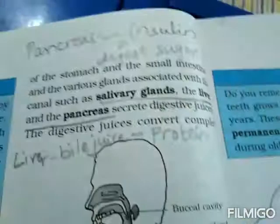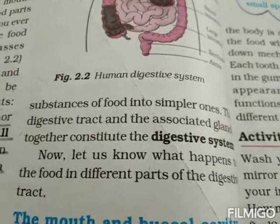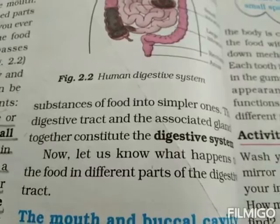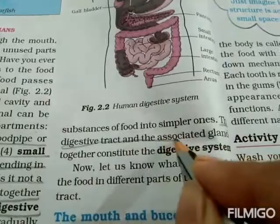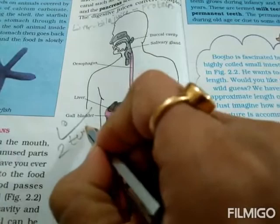The digestive juices convert complex substances of food into simpler ones. The digestive tract and the associated glands together constitute the digestive system.